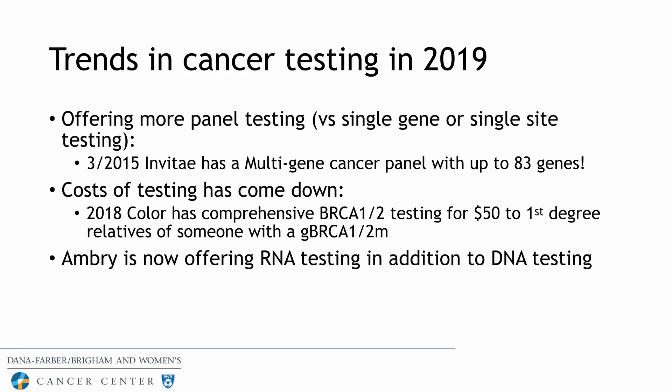Current trends in cancer testing in 2019 include offering more panel testing as opposed to single gene or single site testing. Invitae now has a multi-gene cancer panel with up to 83 genes. The cost of testing has also come down, and insurers are offering more coverage because there are broader clinical indications. Color Genomics offers a comprehensive BRCA1/2 test for only $50 for first-degree relatives of someone with a germline BRCA mutation.